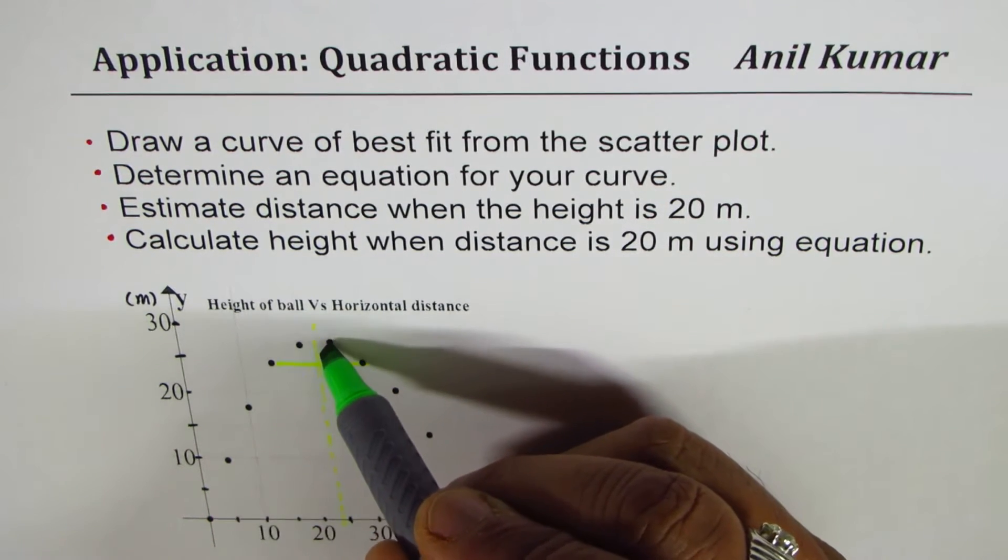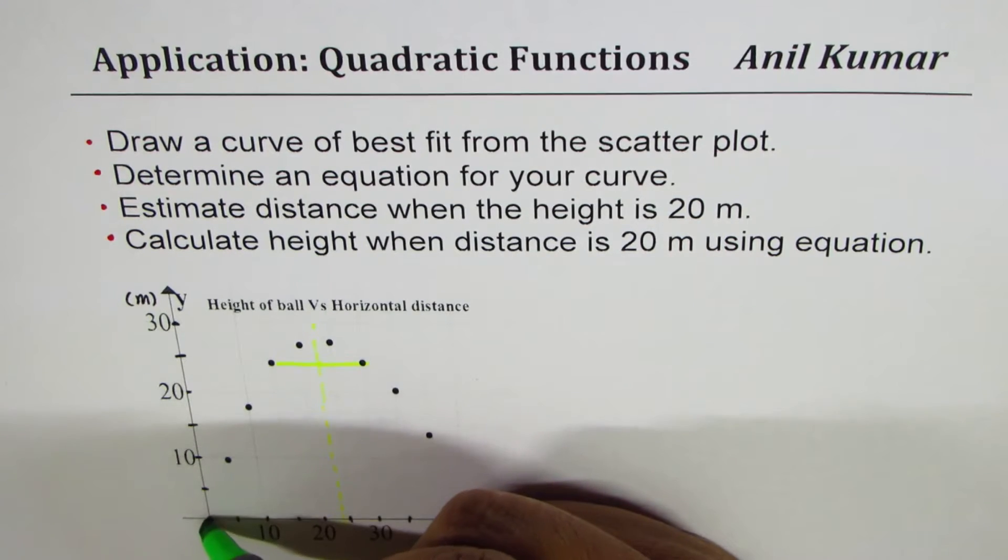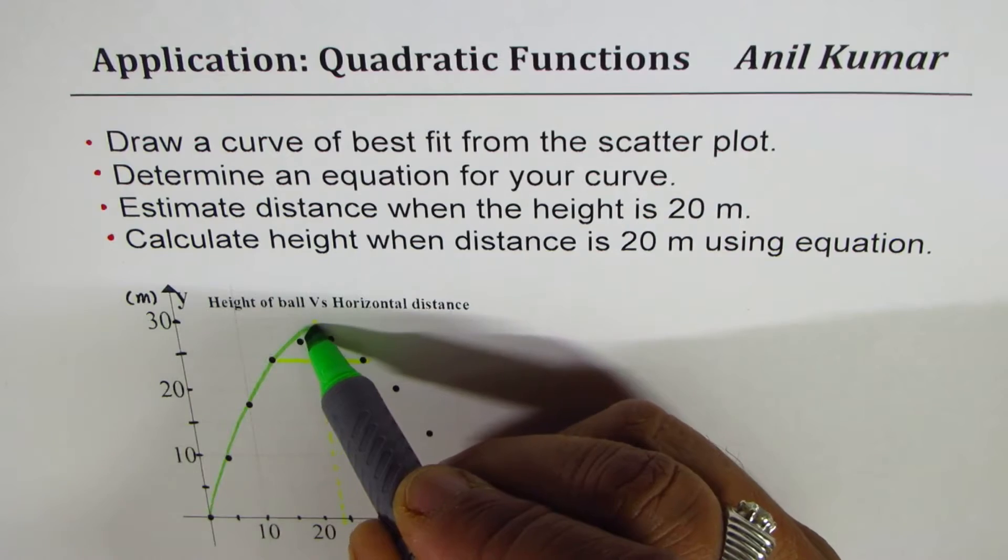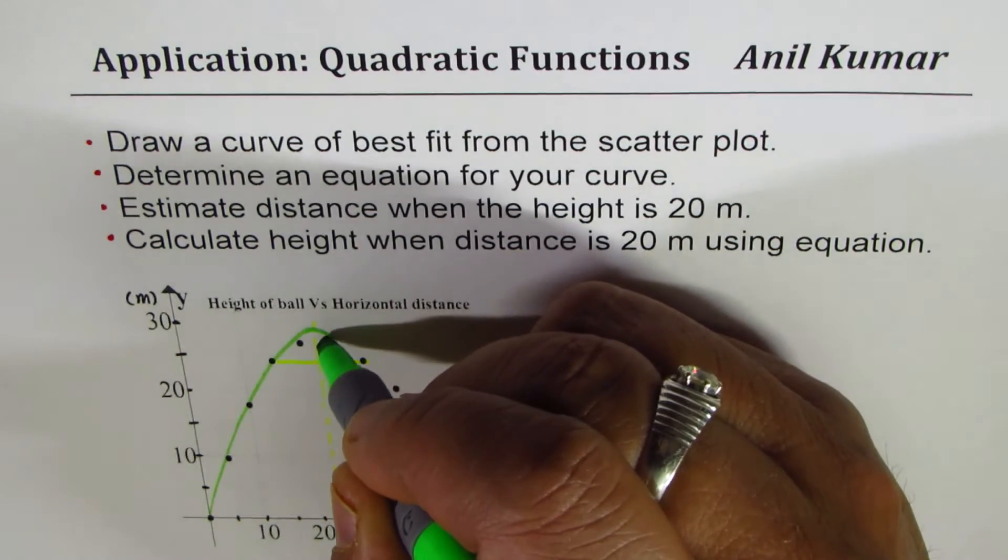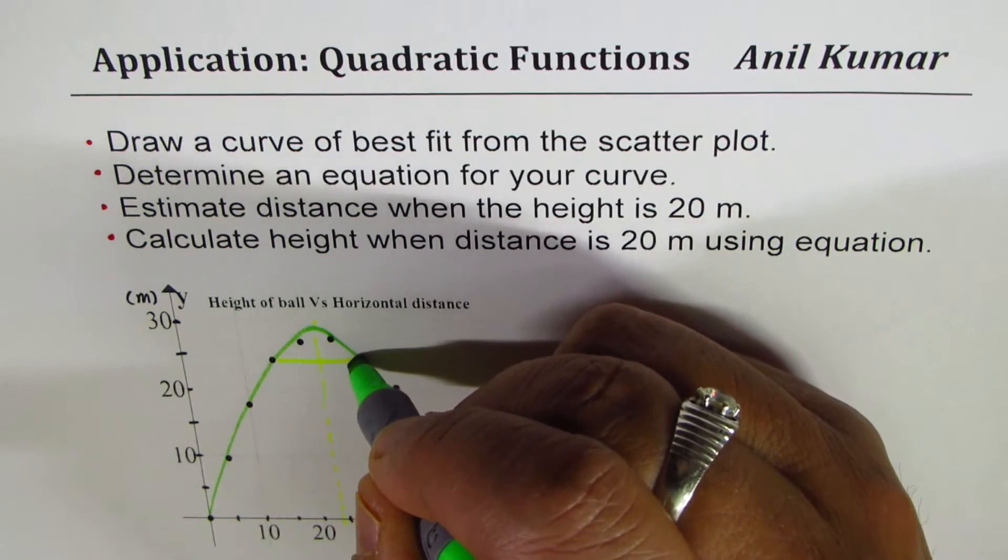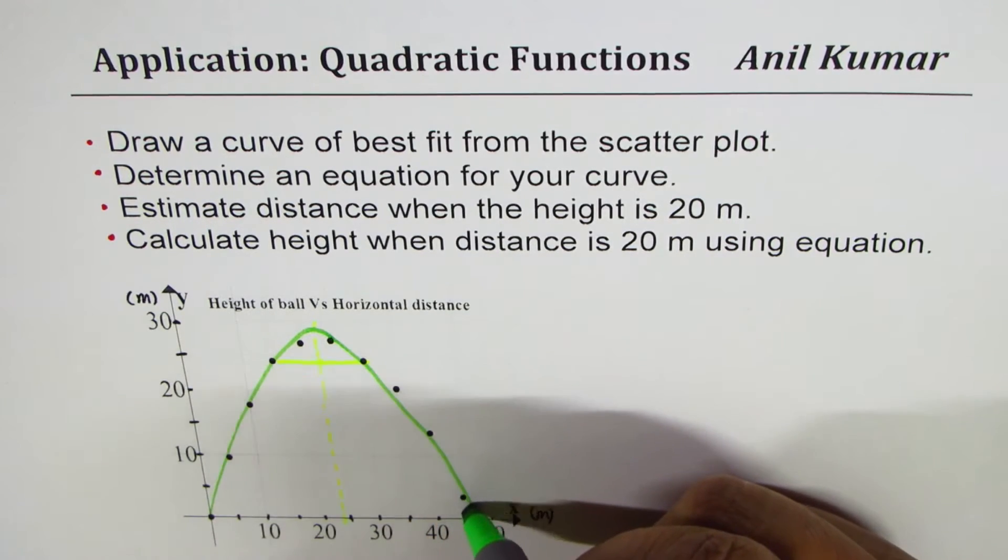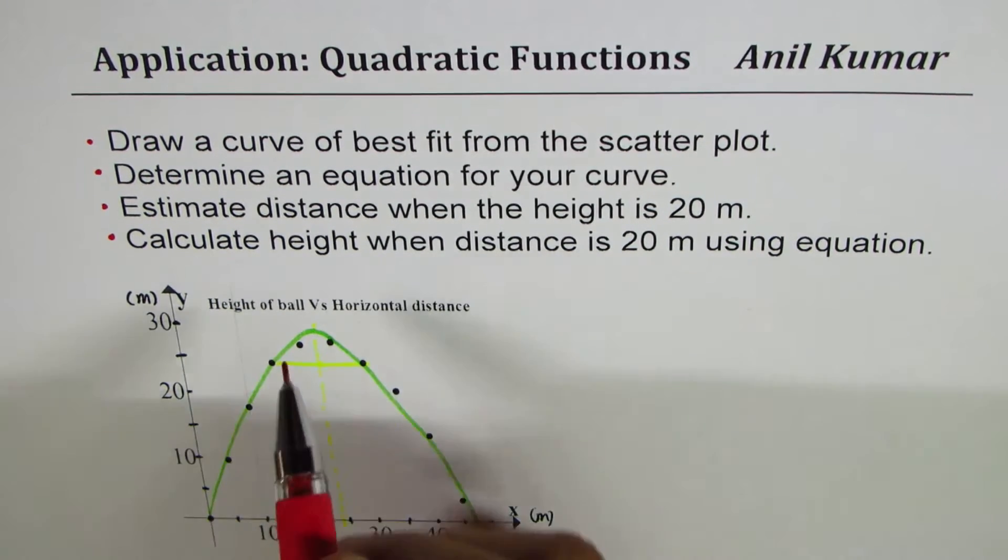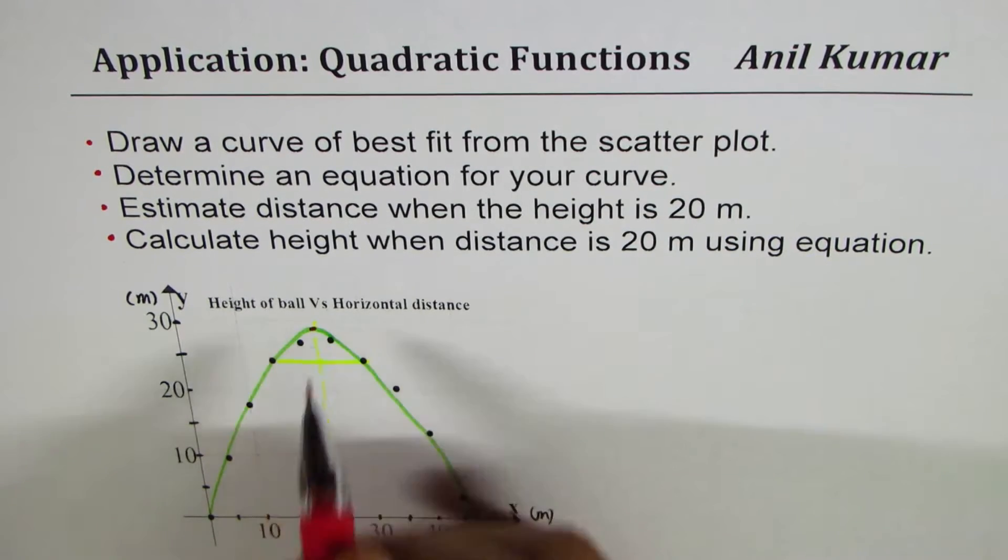We'll plot the parabola, kind of like this - a smooth curve which kind of bends here. I'm drawing it light so that if required it could be corrected. So that's the parabola which I have made and I will call this as my line of best fit. From here what I observe is that this becomes the vertex.